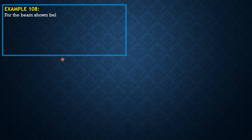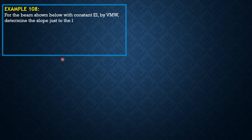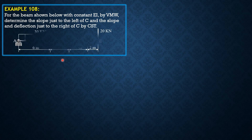For a beam shown below with constant EI, by the virtual work method determine the slope just to the left of C, and the slope and deflection just to the right of C by Castigliano's second theorem.